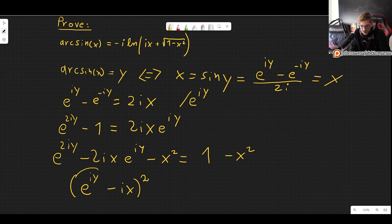Now we can ensure that this is correct. So this thing squared gives us this. Then the product of these two gives us minus 2 times ix e to the iy, which is precisely this. And finally, this thing squared is minus x squared.